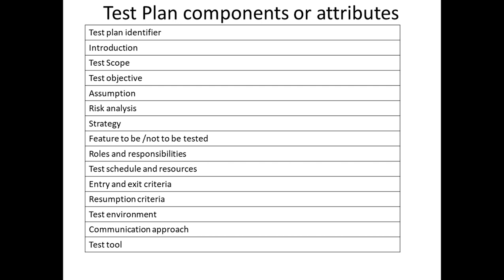There is also suspension and resumption criteria. For example, while testing 100 test cases, if you find a defect that blocks all other further test cases, you pause or suspend the testing activity. When that particular defect is fixed and you receive a new build, you can resume your testing activity and continue further testing.